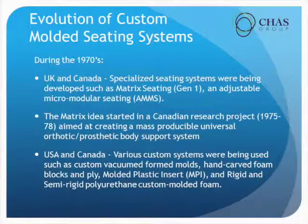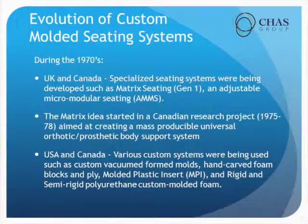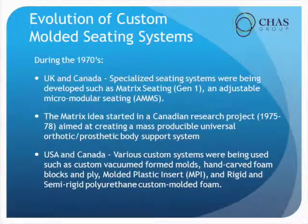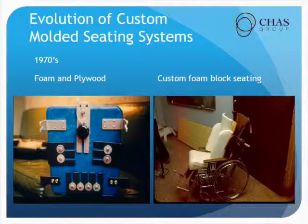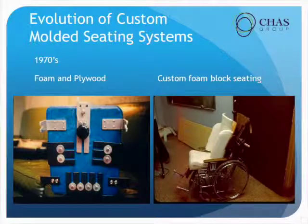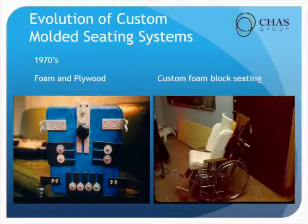In the US and Canada, various systems were being used: vacuum form molds, hand carved molds, plastic mold inserts, and rigid and semi-rigid poly foams. Here are some pictures of early foam and plywood and custom hand carved seats — some of you probably remember these days.